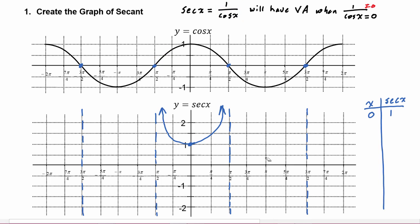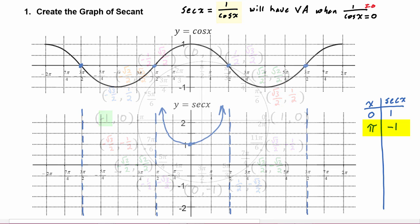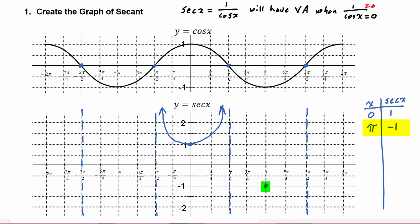If we look at the secant of pi, we know that the cosine of pi is negative one, so one over negative one is negative one. So the secant of pi we can plot that point — y value is negative one. As the y value of cosine goes towards zero, this time it's through negative numbers. If the denominator is negative the whole fraction is negative, so as the denominator goes to zero through negative numbers, the fraction will go to negative infinity.